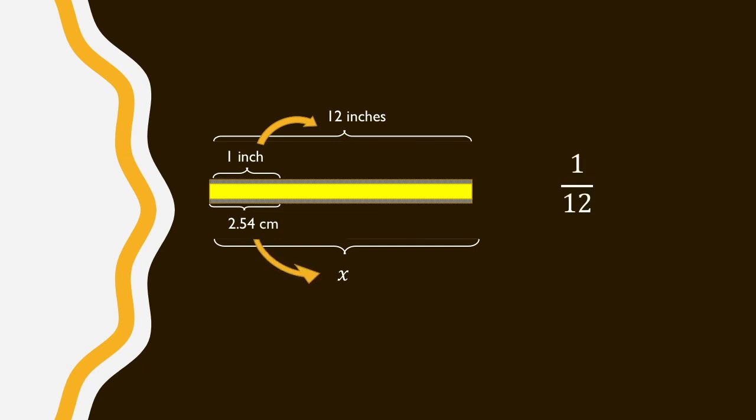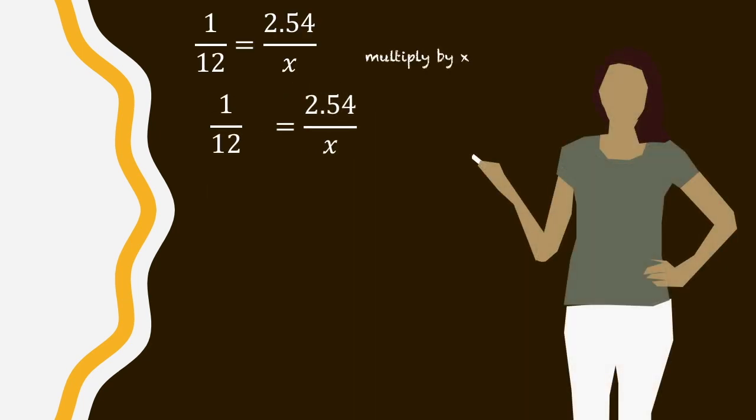Of course, we can express the ratio in a different form too. In the example where we want to know how many centimeters there are in 12 inches, we can say that the ratio of inches, 1 to 12, will be the same as the ratio of centimeters, 2.54 to the unknown amount of centimeters, x. And you'll note that the equation will rearrange equivalently to before.